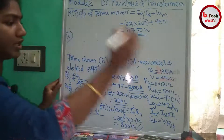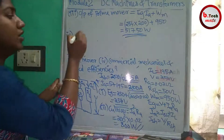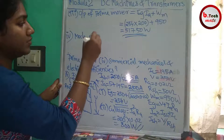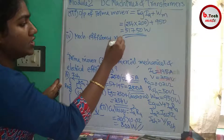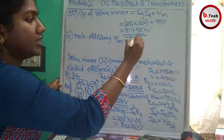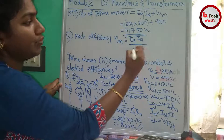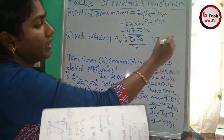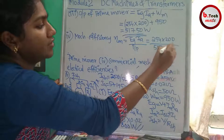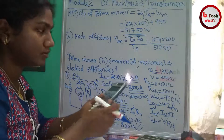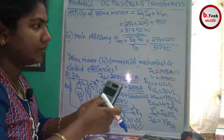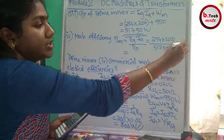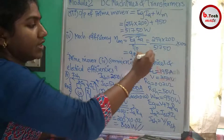Now we calculate the three efficiencies. Mechanical efficiency ηm = EgIa / mechanical input = 254 × 200 / 51750 × 100%. Calculating: 50800 / 51750 × 100 = 98.16%.